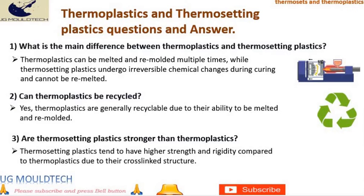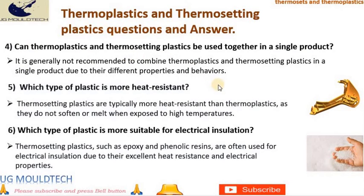Questions and answers: 1. What is the main difference between thermoplastics and thermosetting plastics? Thermoplastics can be melted and remolded multiple times, while thermosetting plastics undergo irreversible chemical changes during curing and cannot be remelted. 2. Can thermoplastics be recycled? Yes, thermoplastics are generally recyclable due to their ability to be melted and remolded. 3. Are thermosetting plastics stronger than thermoplastics? Thermosetting plastics tend to have higher strength and rigidity compared to thermoplastics due to their cross-linked structure. 4. Can thermoplastics and thermosetting plastics be used together in a single product? It is generally not recommended to combine them in a single product due to their different properties and behaviors.